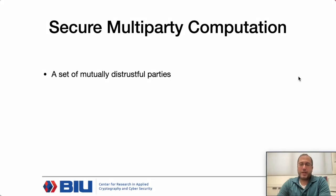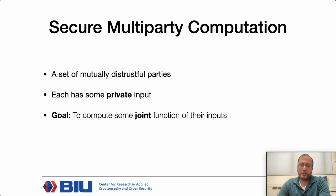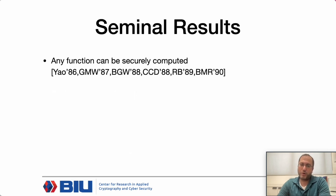In the setting of secure multi-party computation, we have some set of mutually distrustful parties, each with some private input, and the parties wish to compute some joint function of their inputs while preserving security properties such as privacy, correctness, and so on.